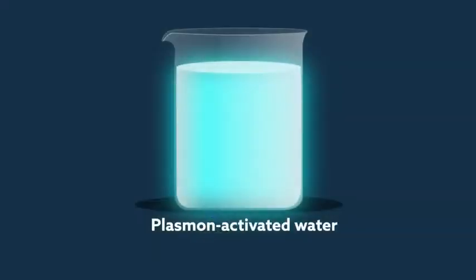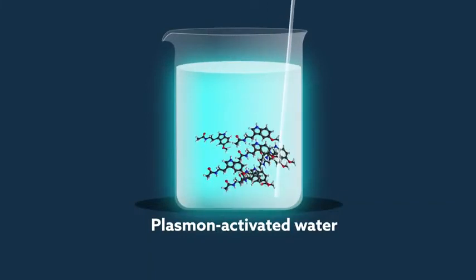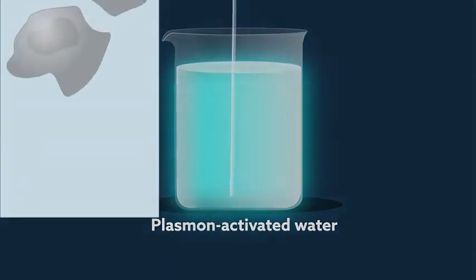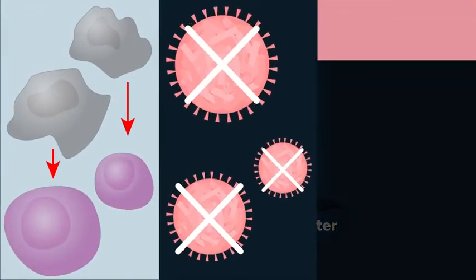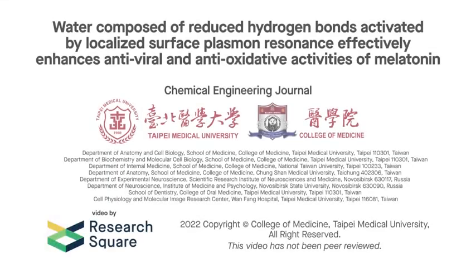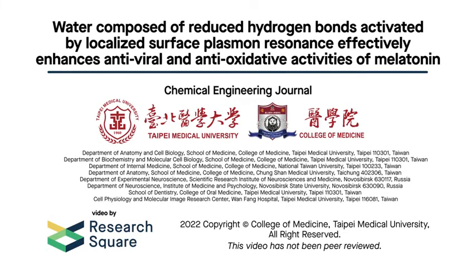While human studies are still needed, these findings are promising. Using plasmon-activated water as an alternative could help preserve melatonin's natural ability to help fight cell damage, viral infection, and the harmful effects of sleep deprivation.